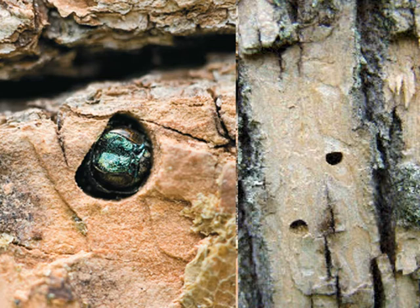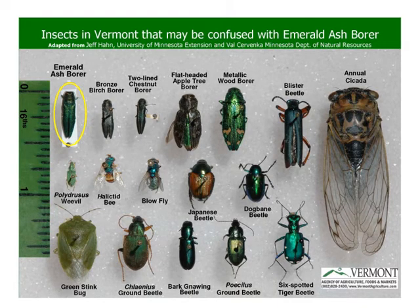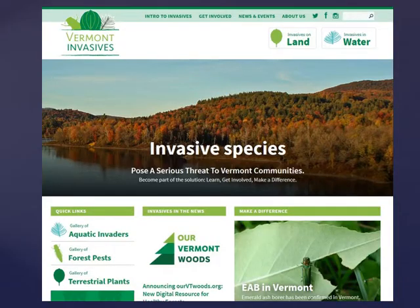The adults exit the tree through D-shaped exit holes that are also characteristic of EAB. These exit holes are very small — only 3 to 4 millimeters — so they are very hard to spot. There are a number of native insects in Vermont easily confused with the emerald ash borer. One of the most commonly confused is the six-spotted tiger beetle, an insect you are likely to see in your garden at about the same time the adult emerald ash borer emerges from ash trees. If you think you've seen the emerald ash borer, please report it on vtinvasives.org, the go-to place for invasive species in Vermont.